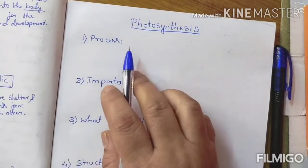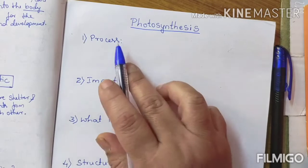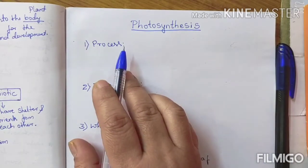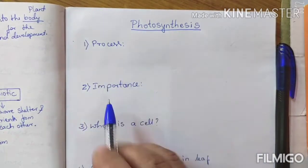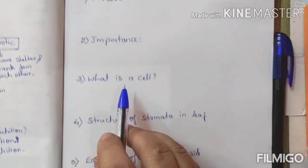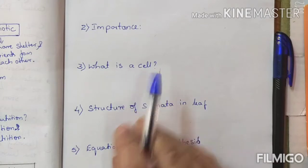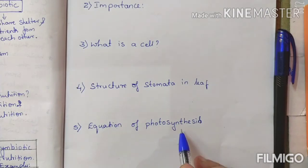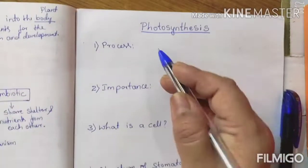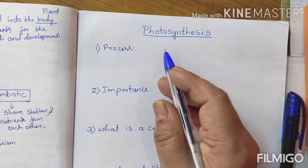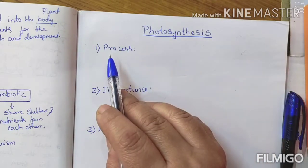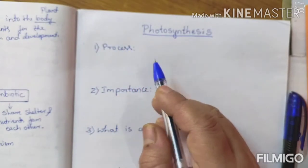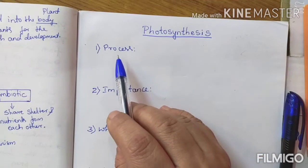Children, today we are going to learn about the process of photosynthesis. We are going to learn about three to four things: the first is the process of photosynthesis, the importance of photosynthesis, then the cell structure of stomata in a leaf, and then the equation of photosynthesis. Here, process means how the photosynthesis is carried out to make food and to have nutrition.